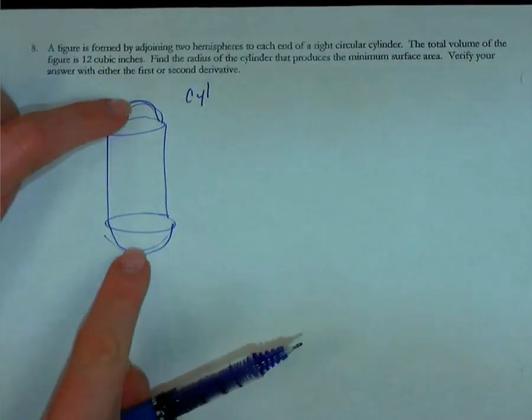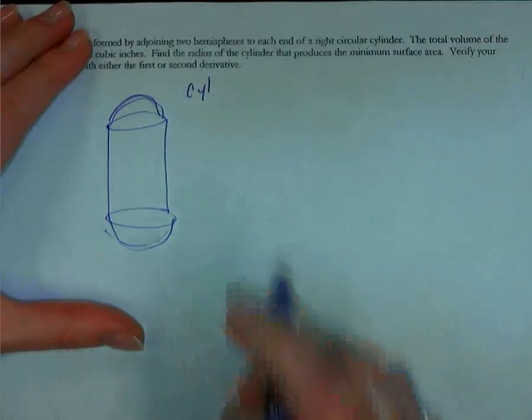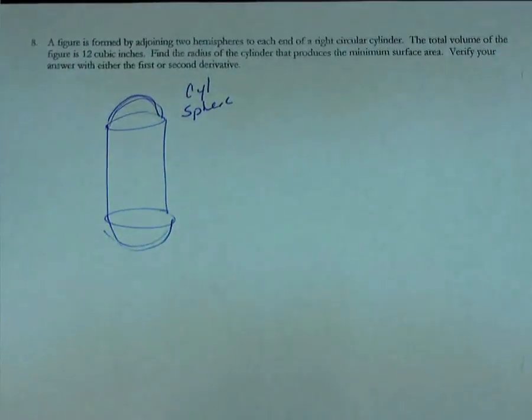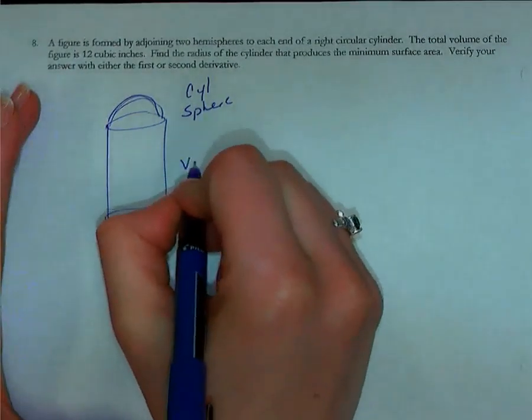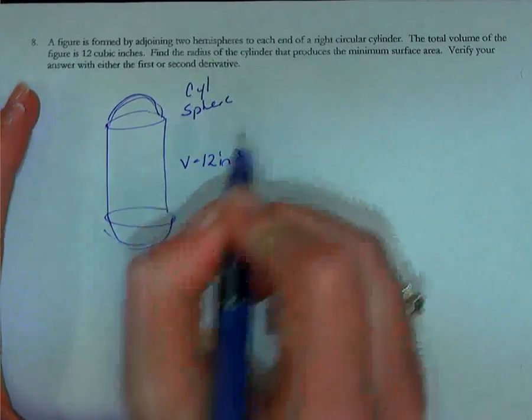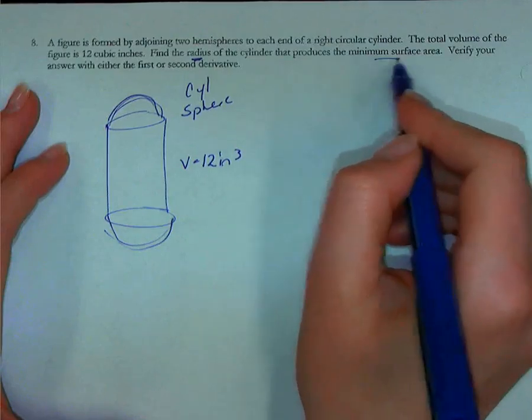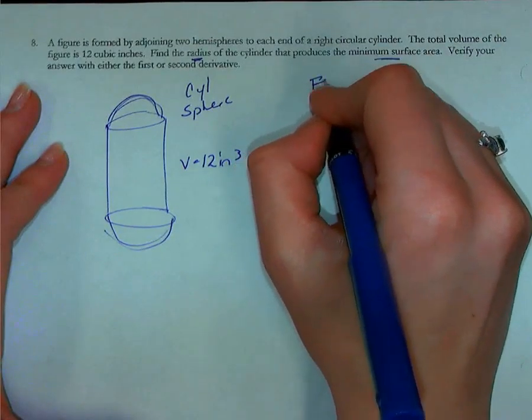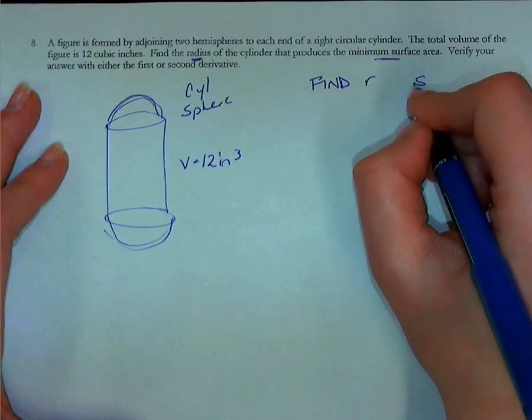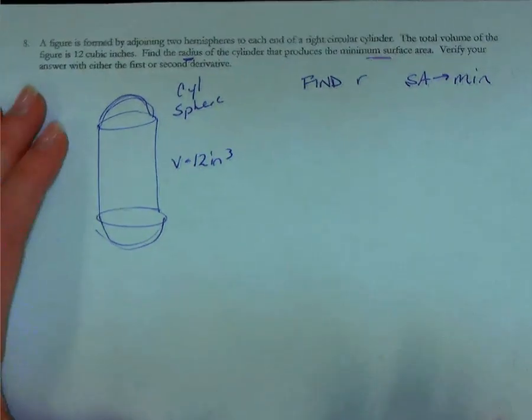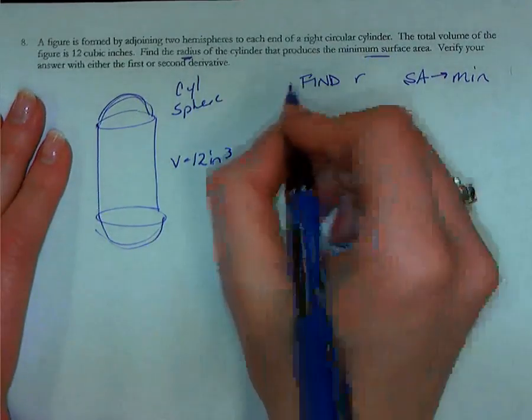If you can picture that idea, what we're talking about is a cylinder and since it has two hemispheres on top, put them together and we've got a full sphere. So those are the shapes we're dealing with. Now, the volume is 12 cubic inches and I'm trying to find the radius that produces a minimum surface area. So I'm trying to find the radius and I want the surface area to be a minimum.